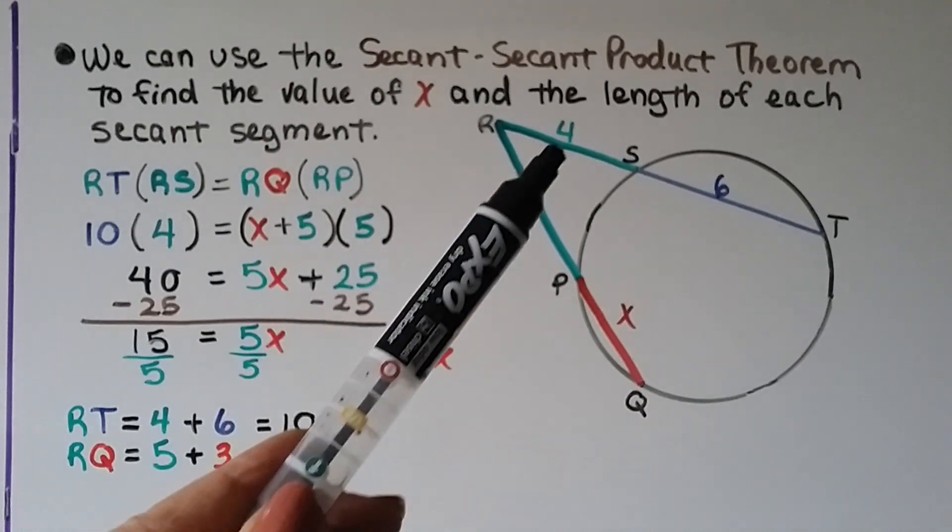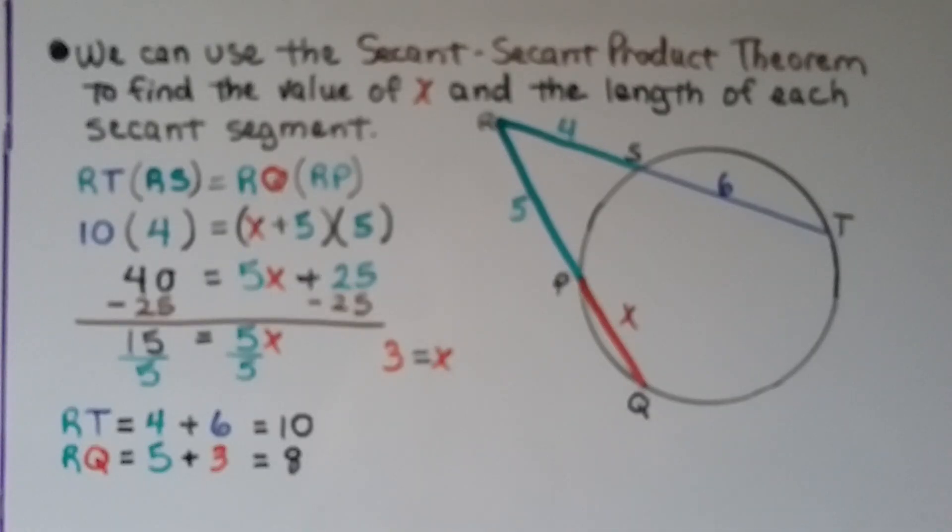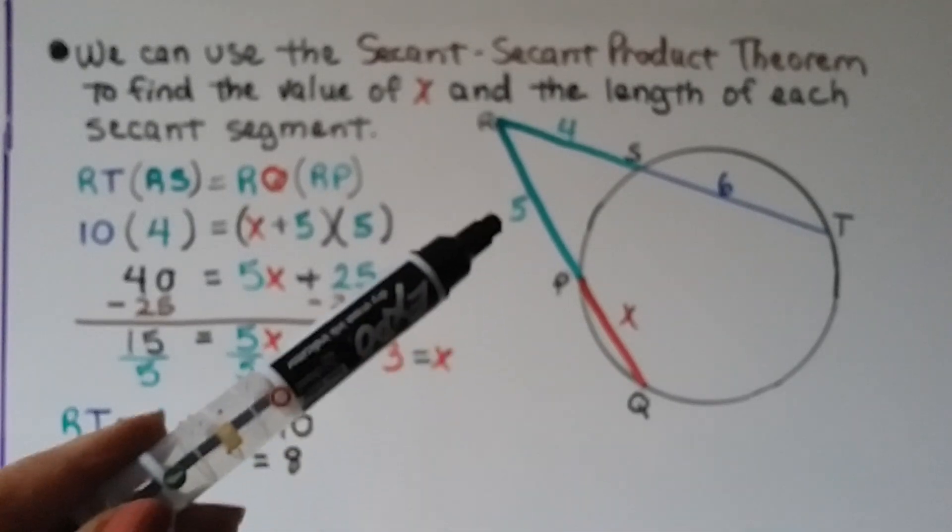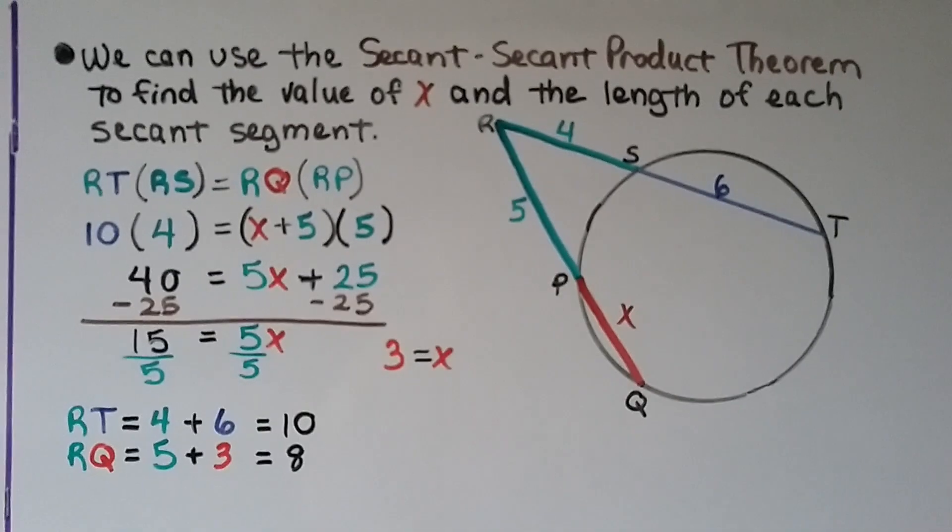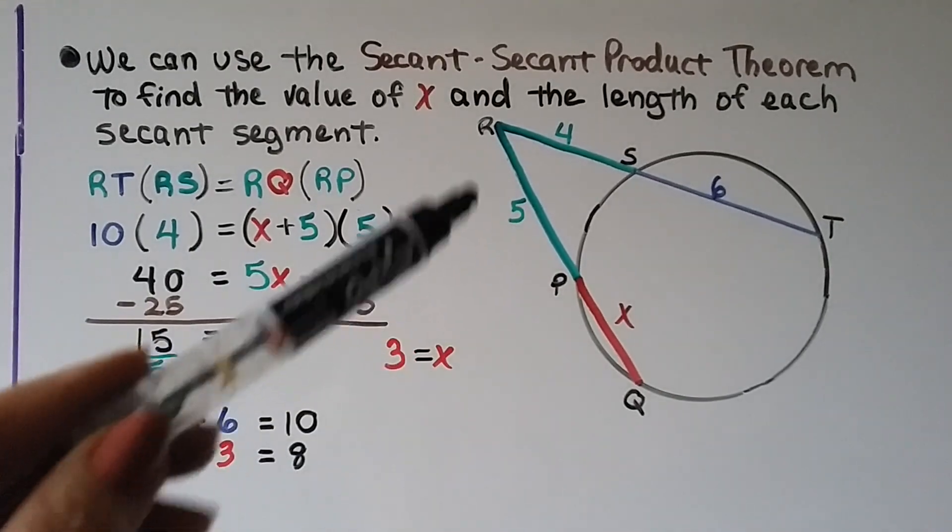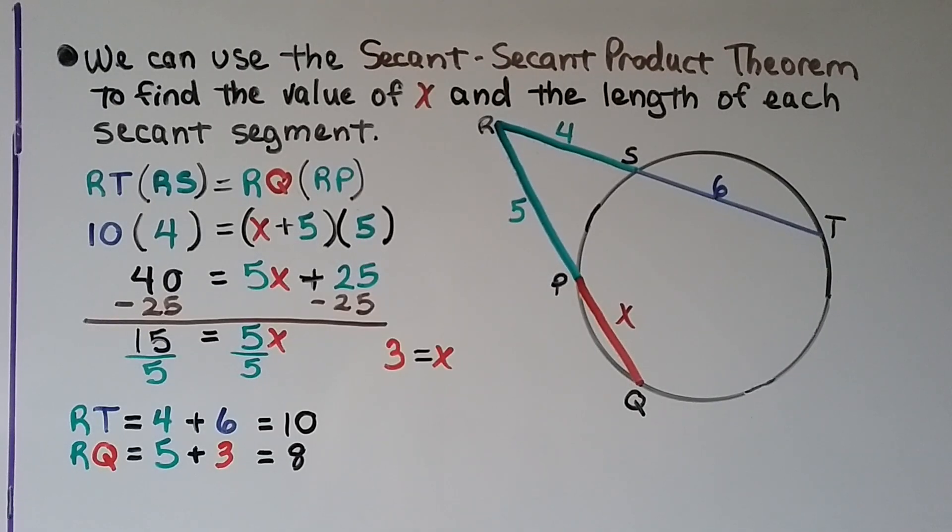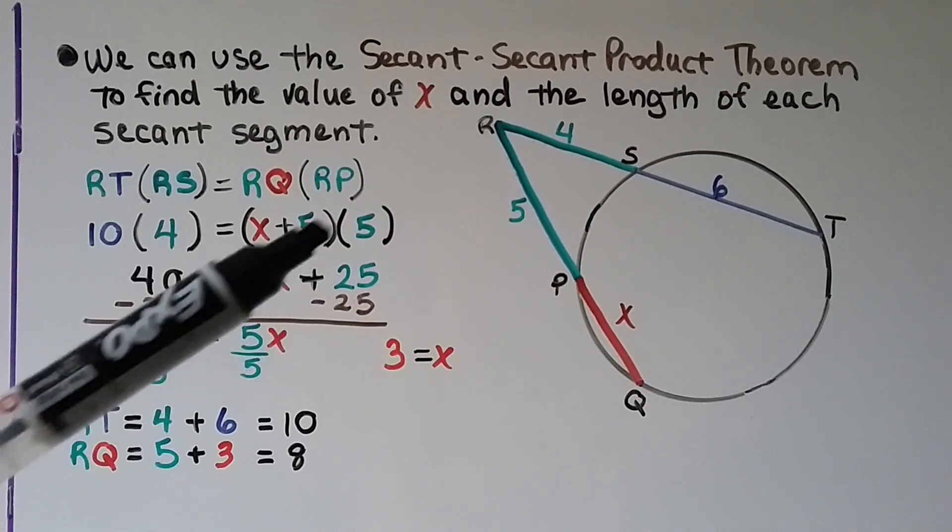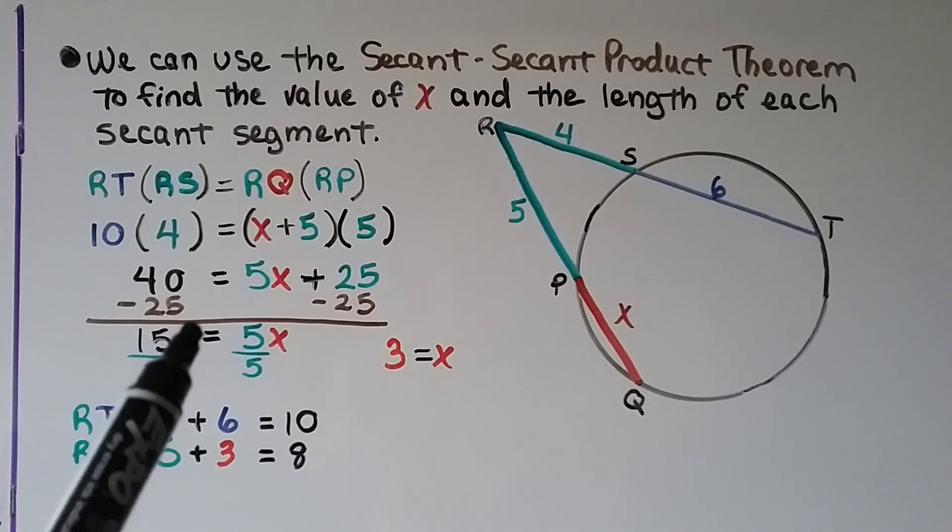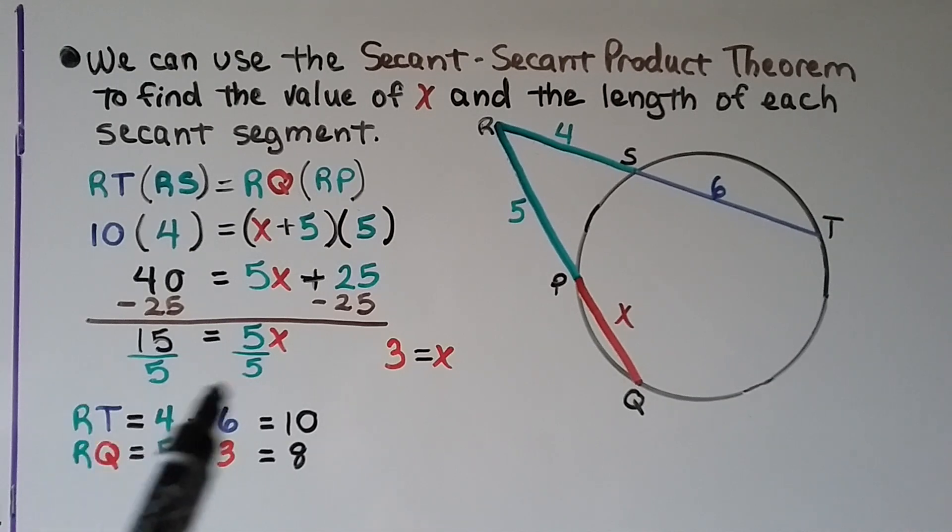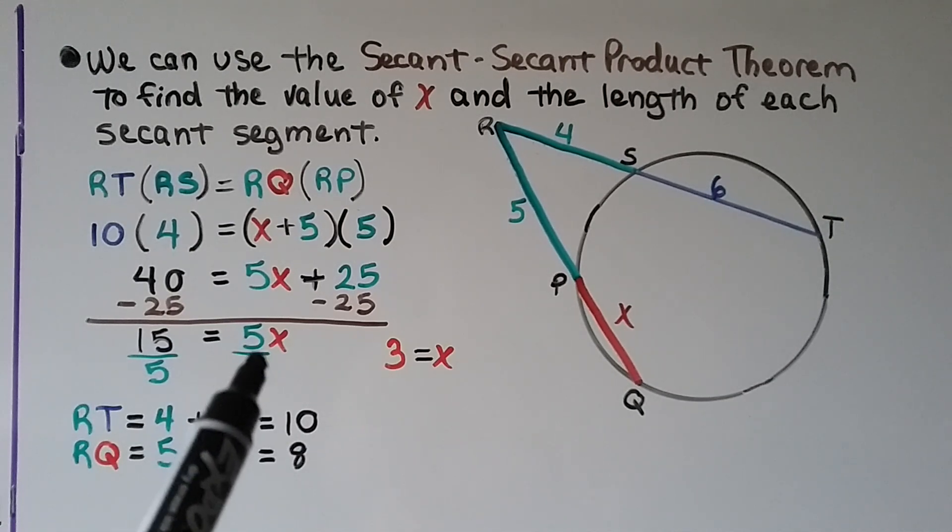We're going to multiply it by 4, its external length, and it's going to equal this part right here, X plus 5, because we're adding them together, times 5, its external length. That's going to give us 40 equals 5X plus 25. We distribute the 5 into the parentheses. We subtract 25 from each side, that's going to give us 15 equals 5X. We divide both sides by the 5 coefficient, and we get 3 equals X.